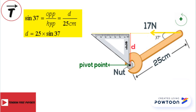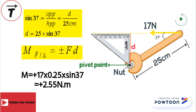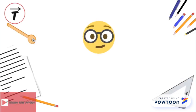Inserting the values of D and F in the equation of moment, we get that the moment equals 2.55 newton times meters. And this is everything for now.